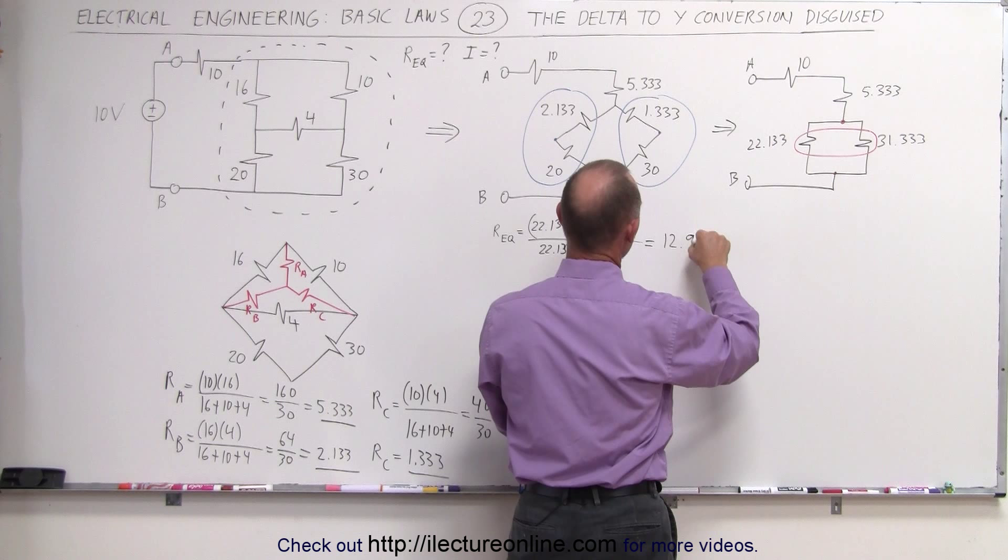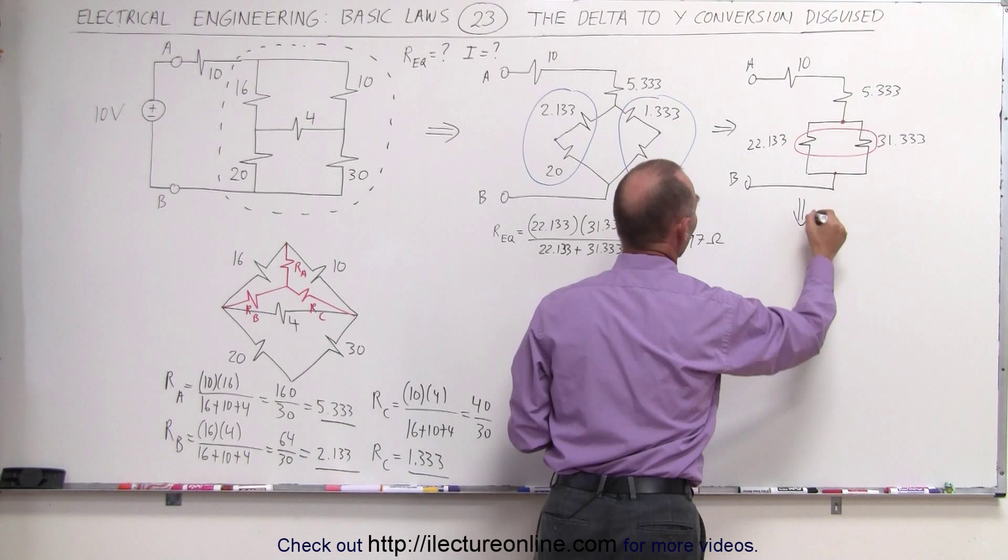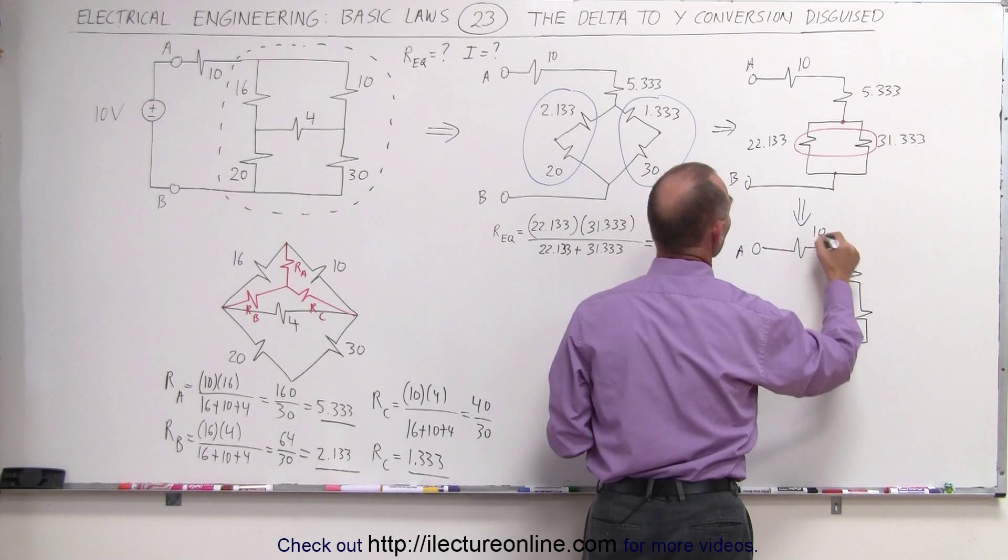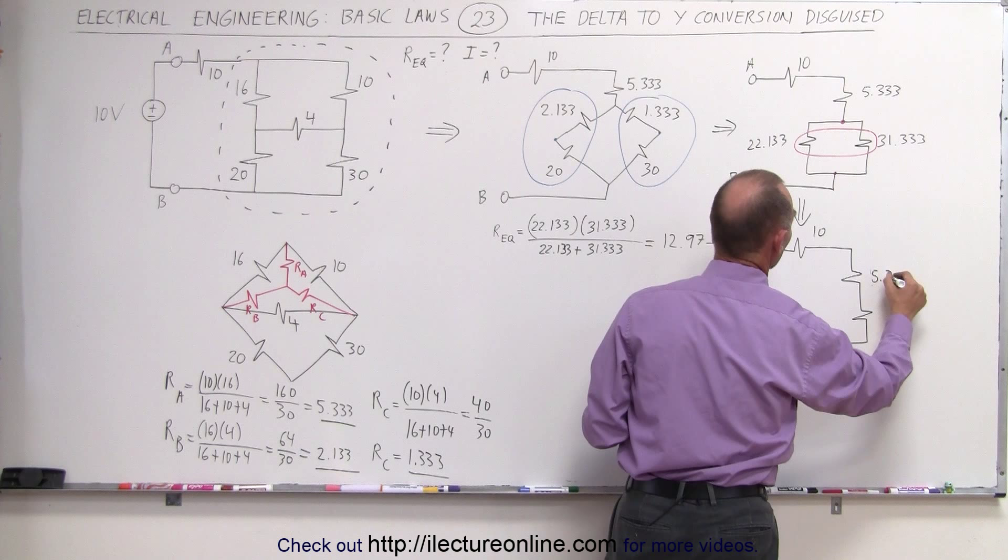The circuit will now look as follows. We still have our 10 ohm resistor. We now have a 5 ohm resistor there and another resistor there. This is our A and our B. This is 10 ohms. This one now becomes, not 12. It's still the 5.333 ohm resistor, and this is the 12.97 ohm resistor.